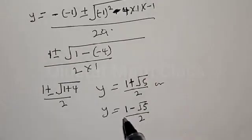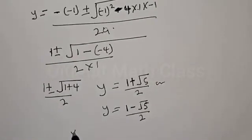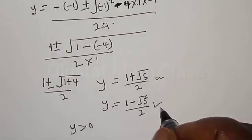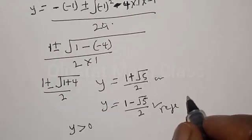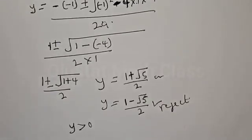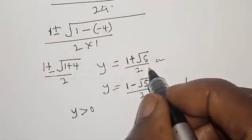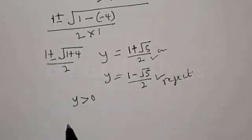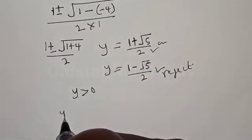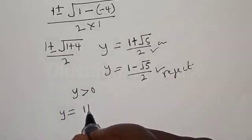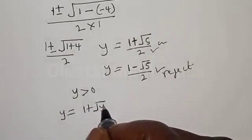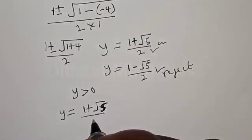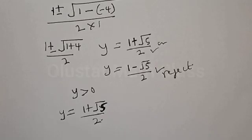So y equals 1 plus square root of 5 over 2, or y equals 1 minus square root of 5 over 2. But in this case we know that y is greater than 0, therefore we reject the negative root and work on the real value of y, which is 1 plus square root of 5 over 2.